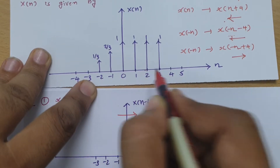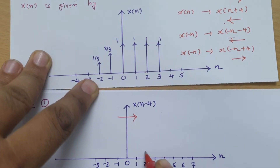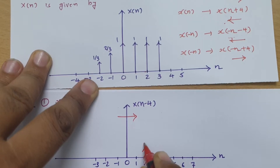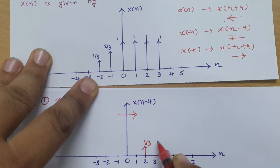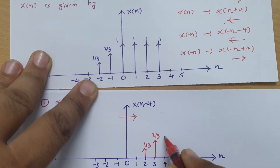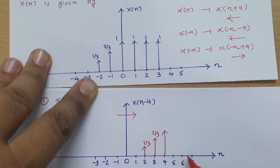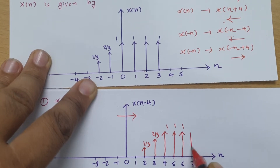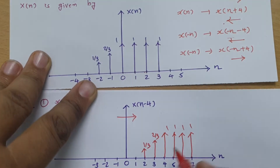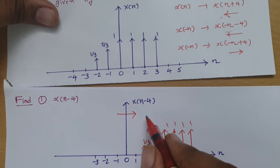Shifting by 4 positions: the data at -2, which is 1/3, will now be at +2. The data at -1, which is 2/3, will now be at position 3. The data at 0, which is 1, will now be at position 4. The data at 1, 2, 3 will get shifted to 5, 6, 7. For all other positions it is 0. This is how we get x(n-4).